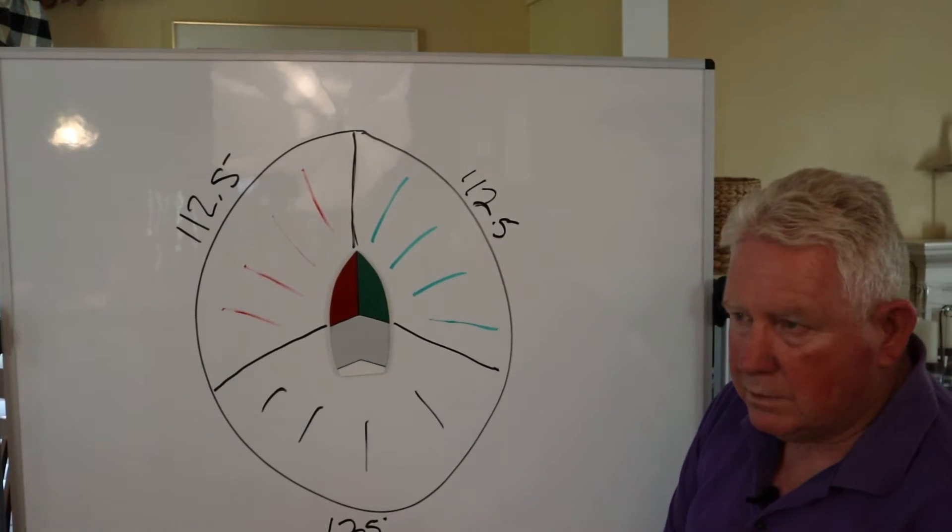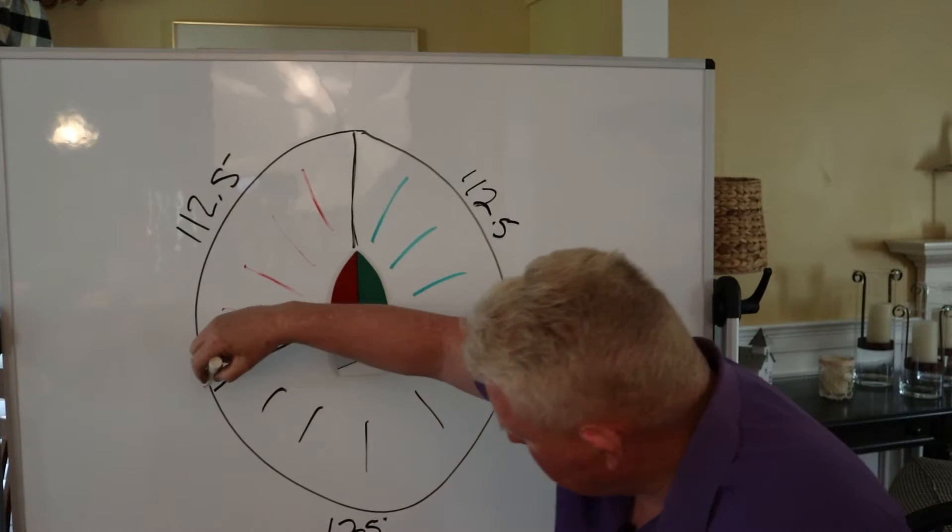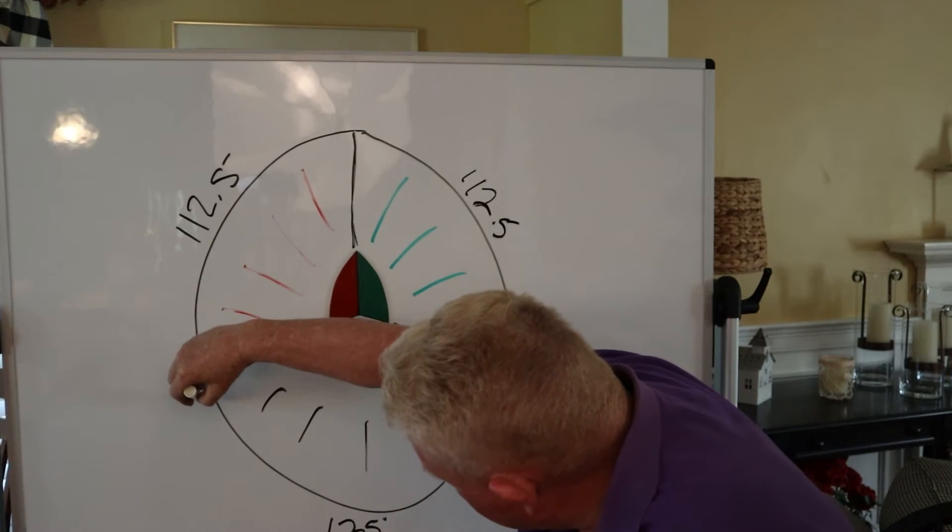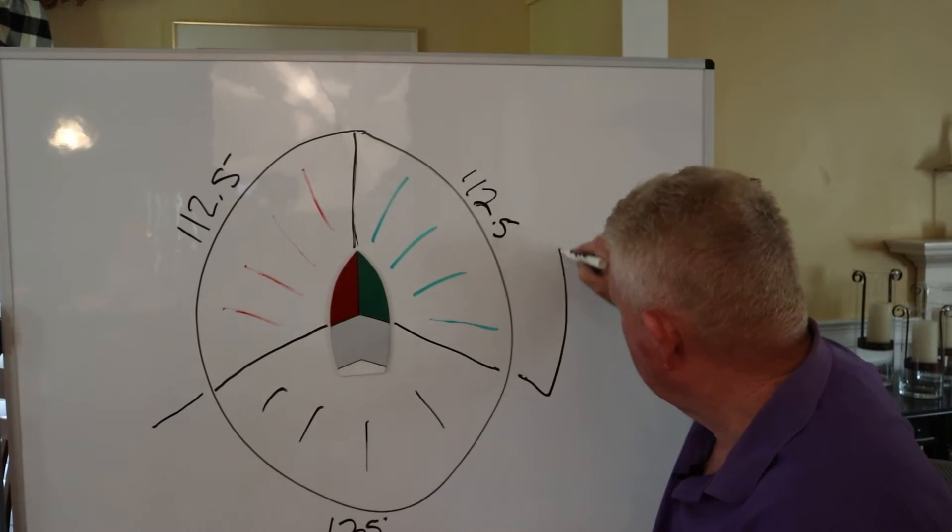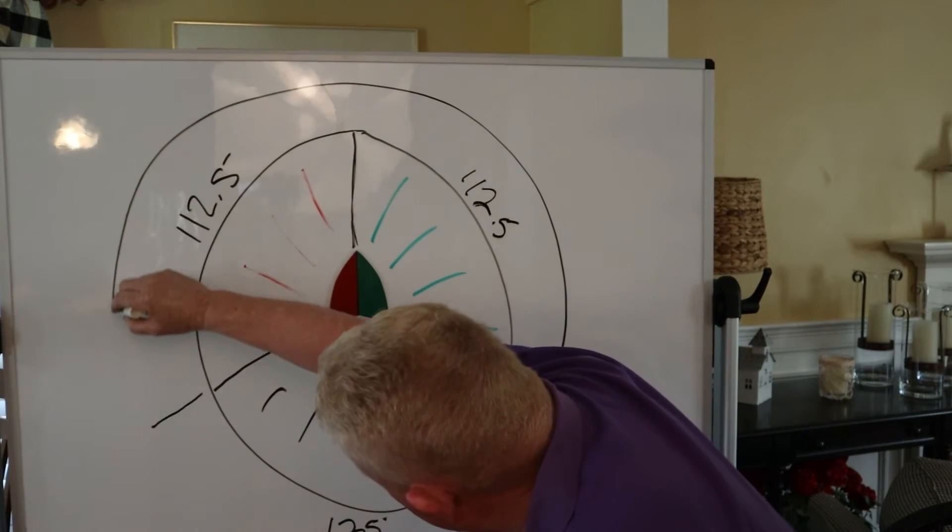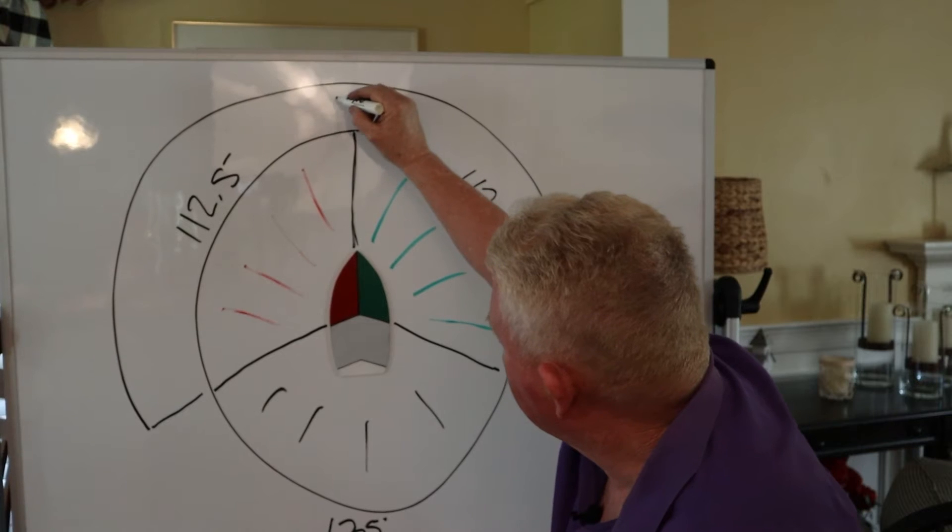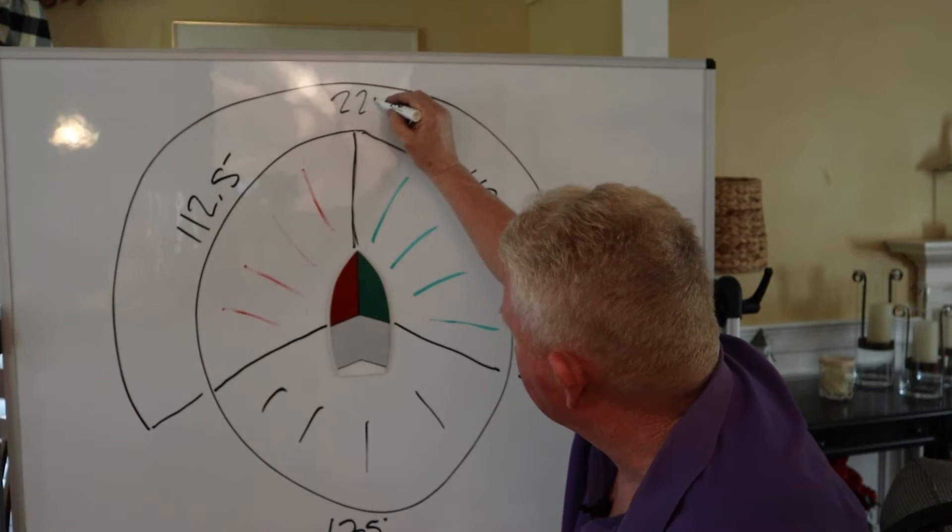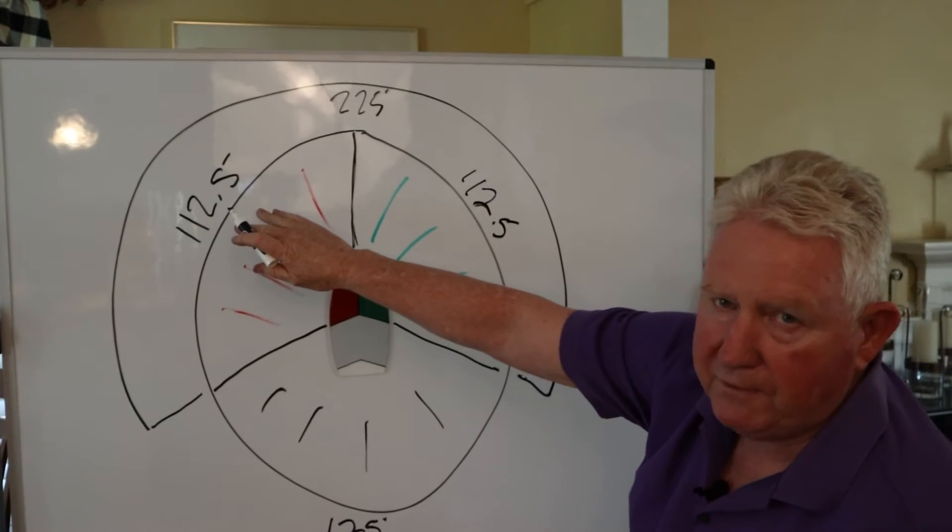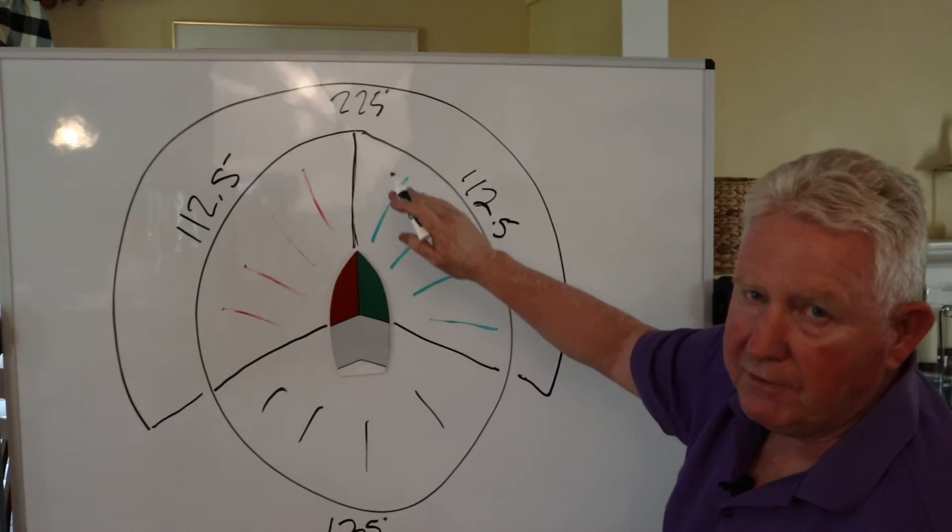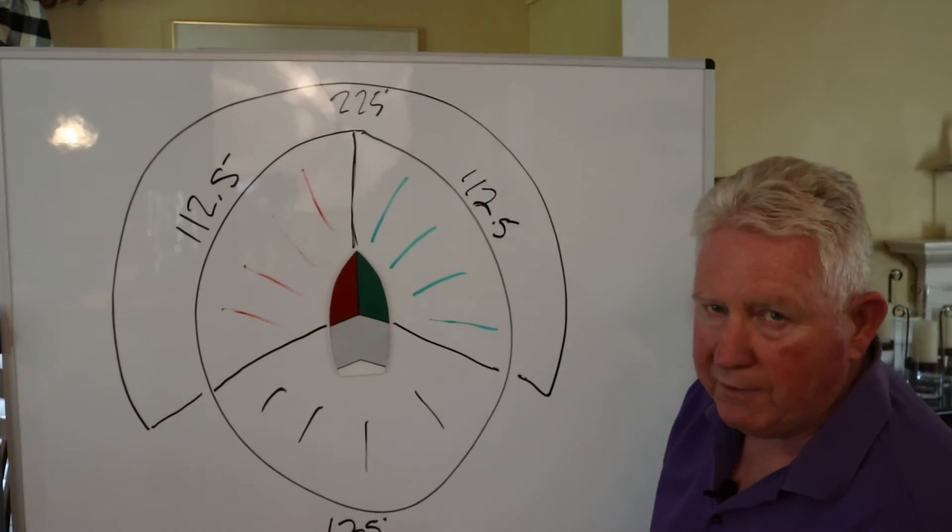Now there's a couple more, so you extend this out. That's 225 degrees. So if you add 112.5 and 112.5, you come up with 225 degrees.